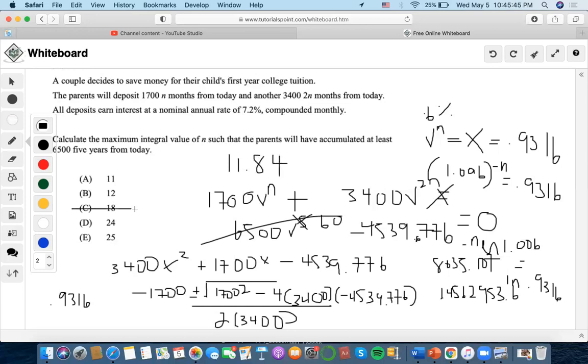Now we know that C, D, and E are out. It says calculate the maximum integral value of N such that the parents will have accumulated at least $6,500 five years from today. When we're talking about calculating the maximum integral value, we want to find the minimum value of N.